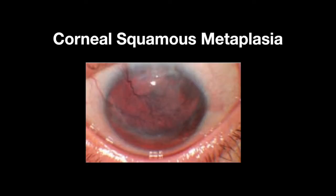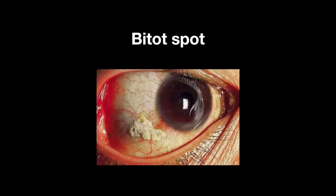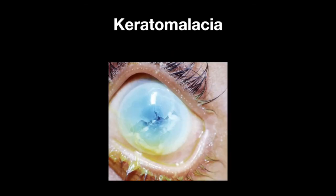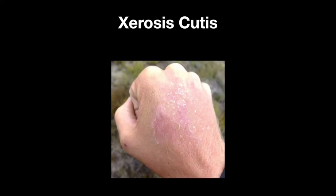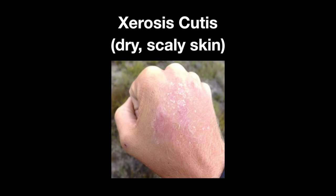Vitamin A deficiency can lead to squamous metaplasia in the cornea. Bitot spots can form, which have a white, foamy appearance and are composed of keratin debris. Vitamin A deficiency can also cause keratomalacia, or corneal degradation, immunosuppression, and xerosis cutis, which is dry, scaly skin.